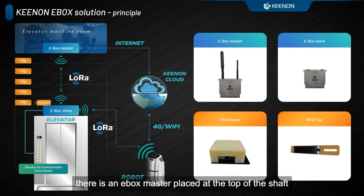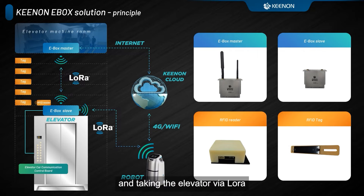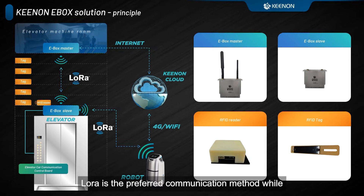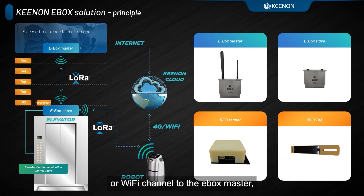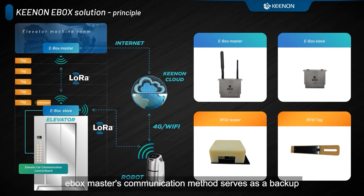There is also an EBOX master placed at the top of the shaft, communicating with the robot via Wi-Fi or 4G. In practice, W3 can use the slave module to complete all operations of calling and taking the elevator via LoRa. So why do we need communication through the Wi-Fi/4G channel? LoRa is the preferred communication method while W3 is calling elevators. But when the elevator is a certain distance away from the robot's starting floor, the signal may be lost. In such cases, the robot's elevator call command is sent through the 4G/Wi-Fi channel to the EBOX master, which relays the command to the slave via LoRa. Once the elevator reaches the robot's floor, the robot can switch back to direct communication with the slave via LoRa. In simple terms, the EBOX master's communication method serves as a backup option, ensuring reliable communication with the elevator.